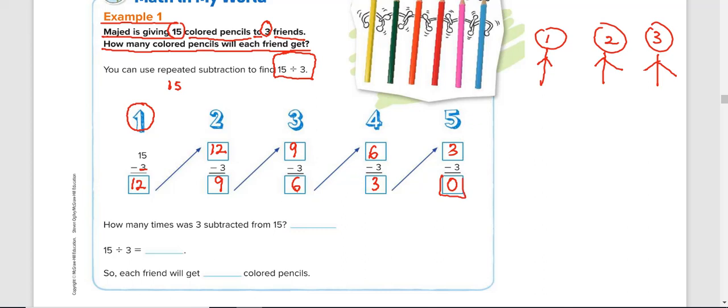Once you've got to 0, then you stop. So let's count how many times did we subtract 3 from this 15 to get to zero. It is 5 times, so we subtracted 3 five times. So in a nutshell, 15 divided by 3 is 5, so each friend will get 5 colored pencils.